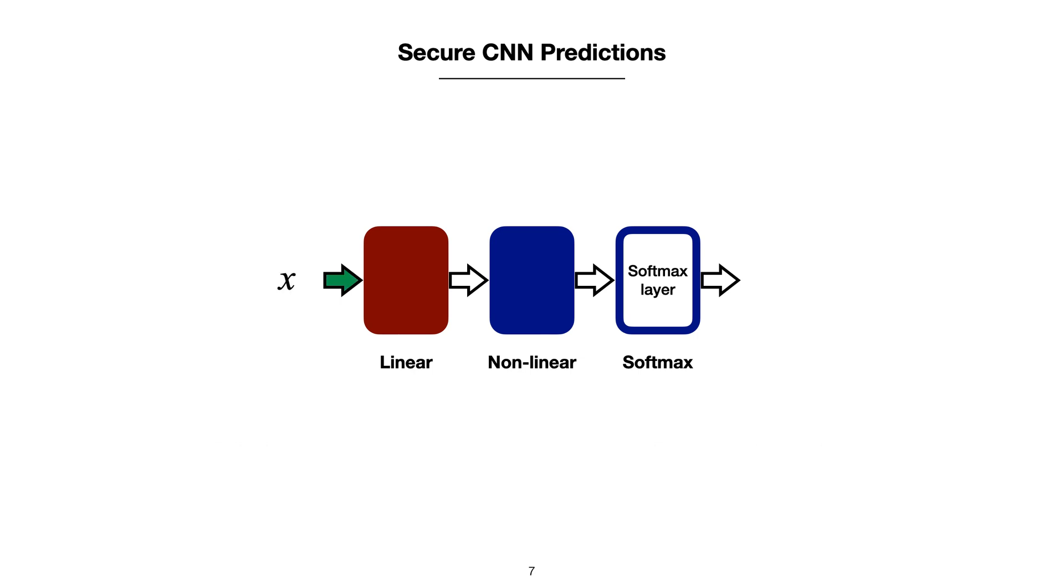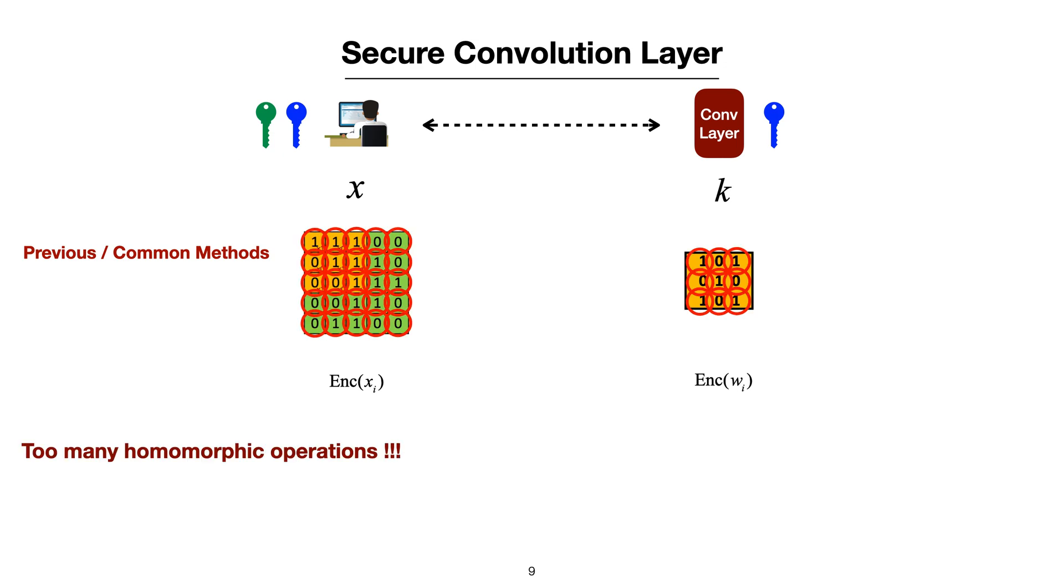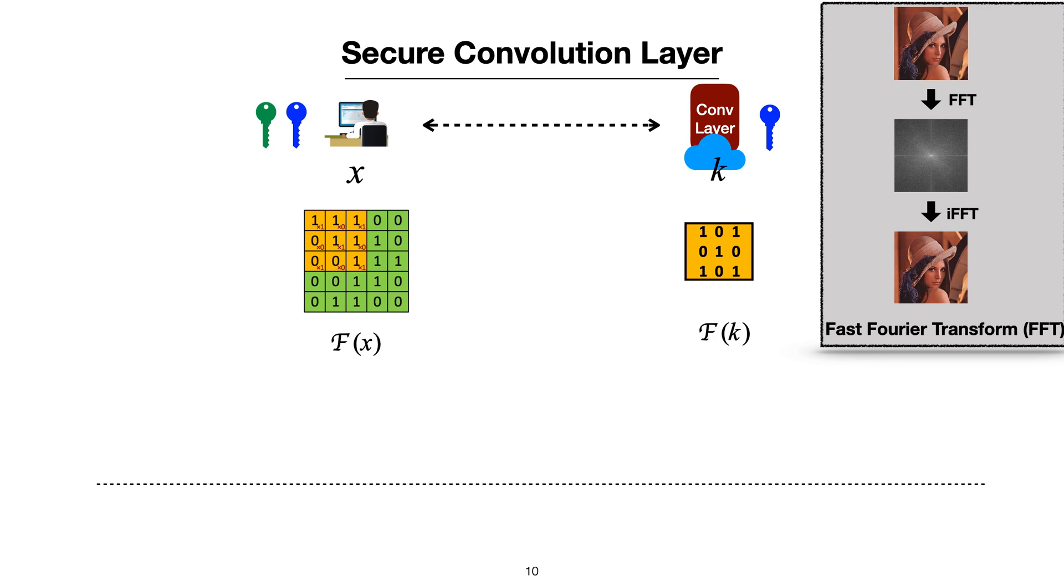Now, assuming we have an input x that is going to go through the whole CNN model. A common way to do this is to encrypt each pixel in the input one by one, but this method has too many homomorphic operations and is very slow and inefficient. In our paper, we do this in another way. We first utilize FFT to convert input x as well as kernels from time domain to frequency domain. Then encrypt the whole input and let the client pass the single ciphertext to the cloud for evaluation. After calculations, the cloud uses a randomly generated value to mix up the ciphertext and send back the result.